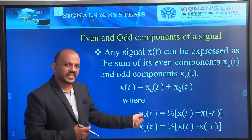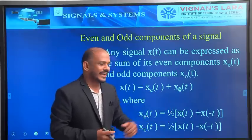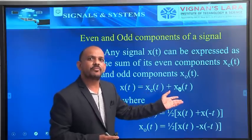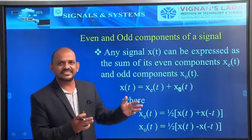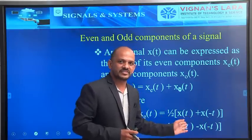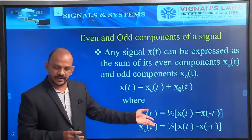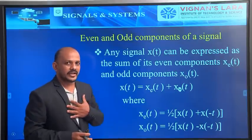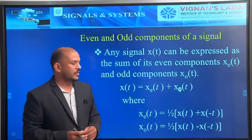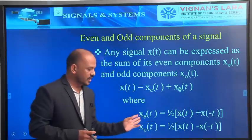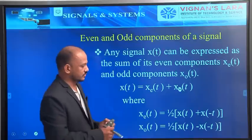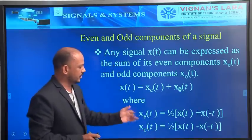We can get the even component of a signal from the equation xe(t) equal to one-half into x(t) plus x(-t). If we add x(t) and x(-t) and divide by 2, we get the even component. In the same way, if we subtract x(-t) from x(t) and divide by 2, that gives the odd component. These are the two equations used to get the even component and odd component.